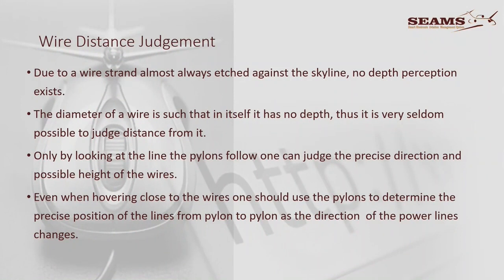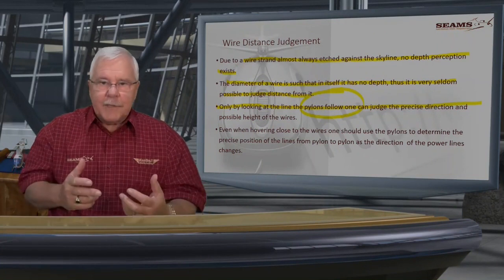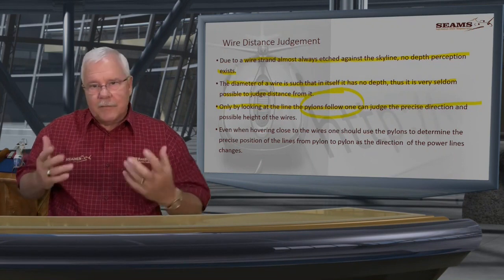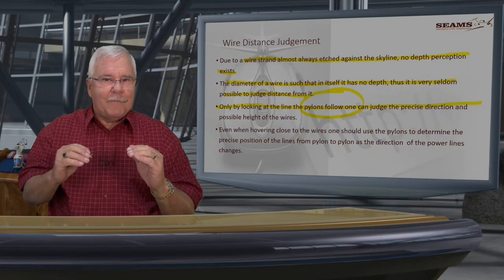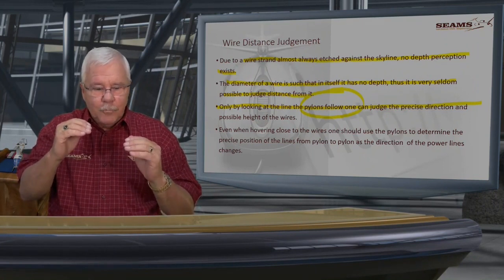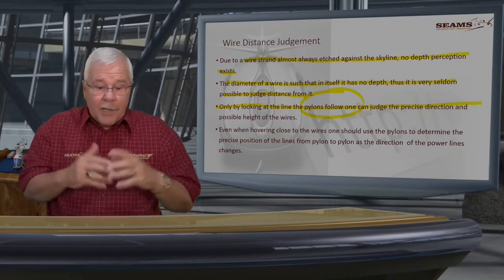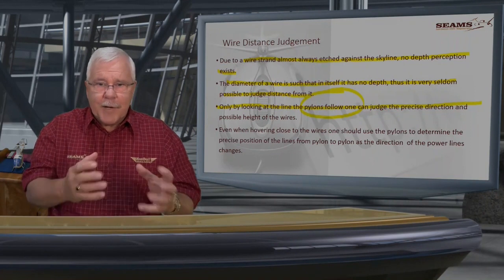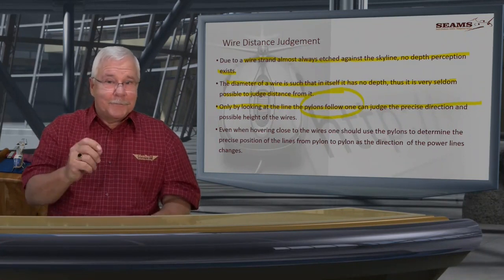Wire distance is difficult to judge — the strands are almost against the sky, so there's no depth perception. Pylons can be seen, but if you're just at the height where the wire doesn't edge against the skyline, it actually disappears. Some of these structures are made of wood with a brown background, and you actually cannot see them until you're very close. By then, it can be too late to pull up.